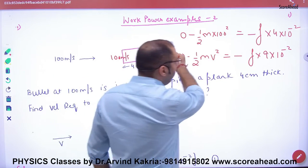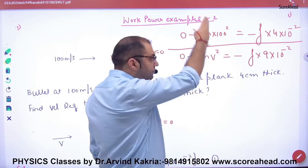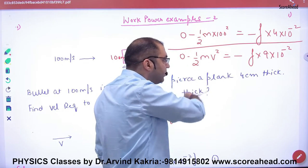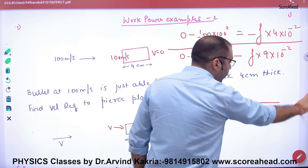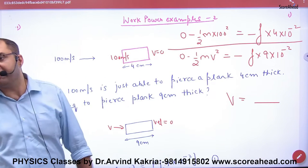So you divide these two equations: f to f cancels, m to m cancels, minus to minus cancels, all cancel, solve for velocity.